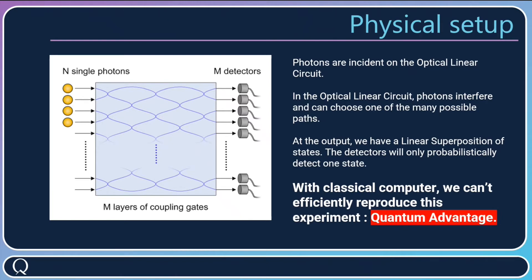As we've seen with the Galton board, at the output we have a linear superposition of states. These detectors will only probably detect one of all states. What is fascinating is that with a classical computer, we can't efficiently reproduce this experiment. So with this quantum device, we have a quantum advantage over a classical computer.